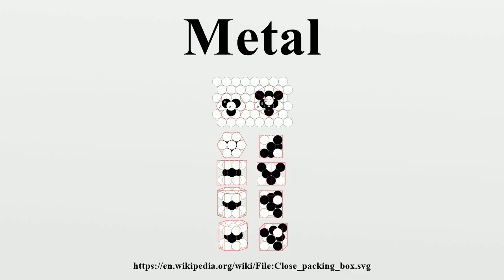Iron alloyed with various proportions of carbon gives low, mid and high carbon steels, with increasing carbon levels reducing ductility and toughness. Other significant metallic alloys are those of aluminium, titanium, copper and magnesium. Copper alloys have been known since prehistory — bronze gave the Bronze Age its name — and have many applications today, most importantly in electrical wiring. The alloys of the other three metals have been developed relatively recently; due to their chemical reactivity, they require electrolytic extraction.